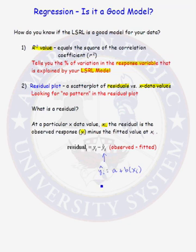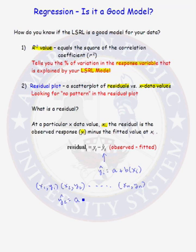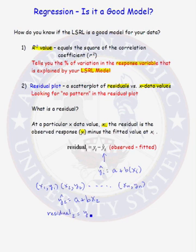So let's say you have data x1, y1, x2, y2, all the way up to xn, yn. Your second fitted value is a plus b evaluated at your second x data value. So a residual is the observed y data, y2, minus the fitted value at x2.